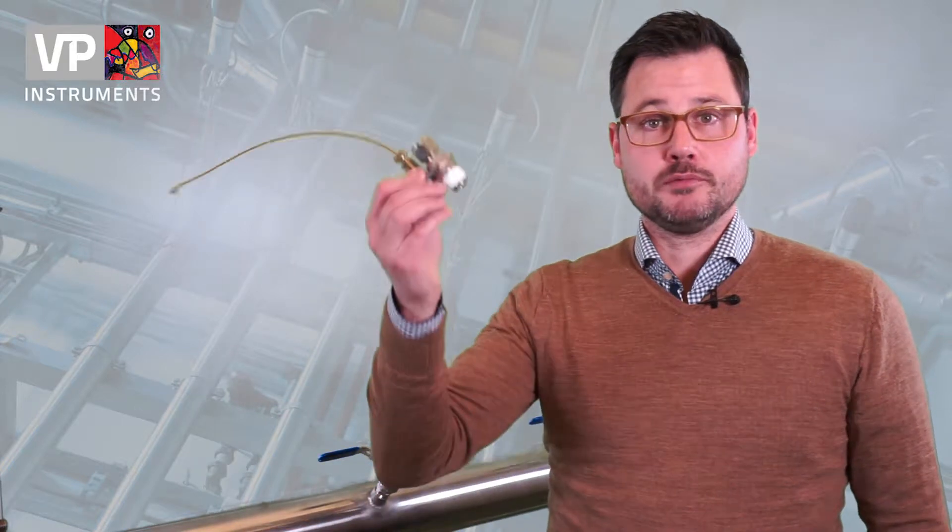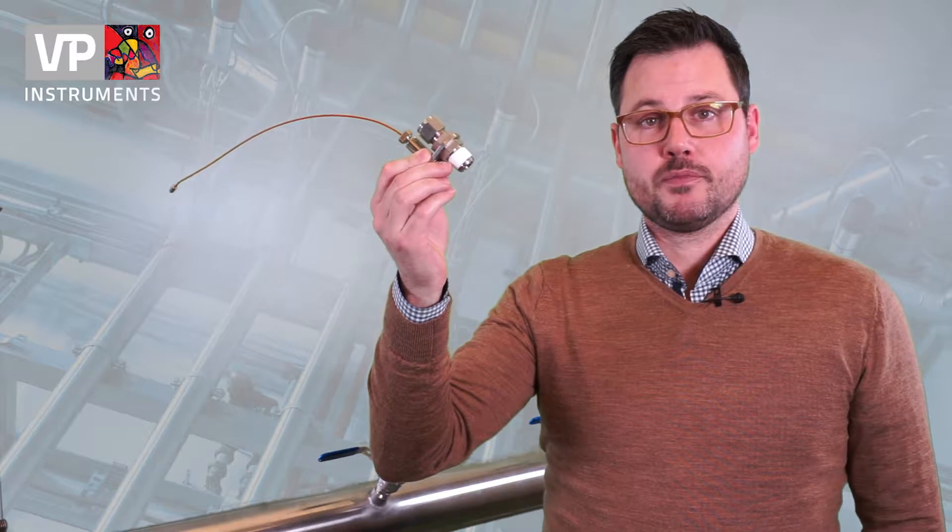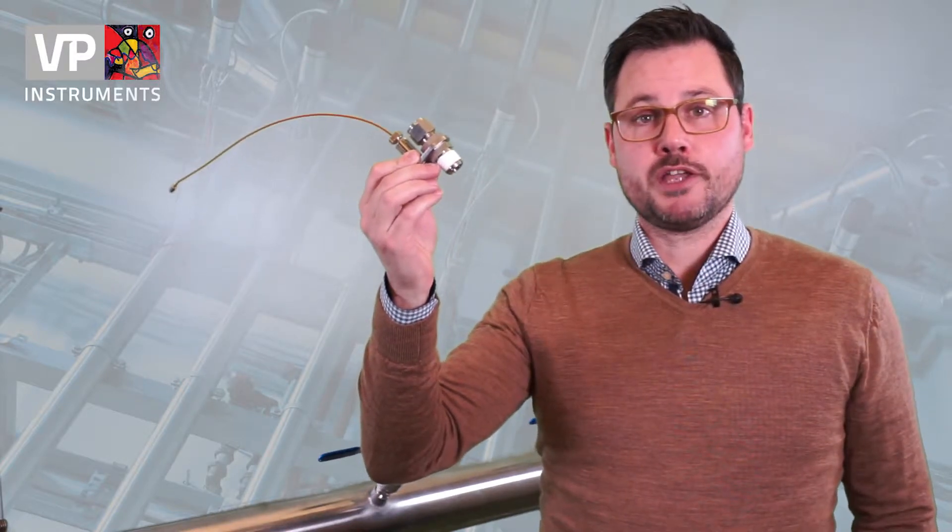Now that you've assembled the compression fitting with an integrated safety cable, it's time to mount this on top of the ball valve. I used some PTFE tape to create a seal between the ball valve and the compression fitting, but you can also use some liquid sealing.